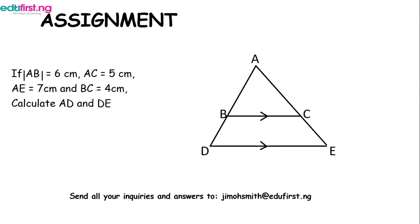Now we have a short assignment. Triangle ADC has been cut by line BC, which is parallel to DE. The given values are: line AB = 6 cm, line AC = 5 cm, line AE = 7 cm, and line BC = 4 cm. You are asked to calculate line AD and line DE. Thank you very much for your time.